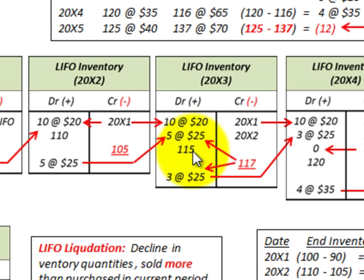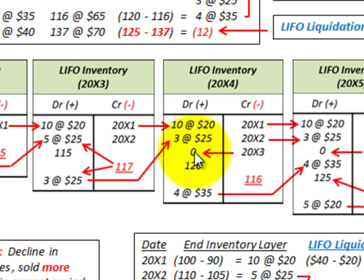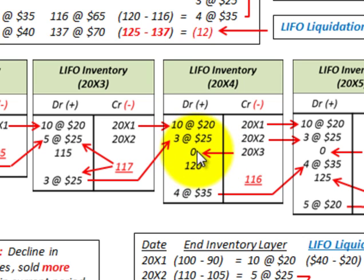In 20X3, we purchased 115 units and used 117, so we took 3 units out of 20X2's layer at $25 per unit. That is what remains as our ending balance — 3 units at $25. As you can see at 20X3, we sold more than we purchased, so there is no inventory layer for 20X3. Those 3 units from 20X2 still carry forward, along with the 10 units from 20X1.